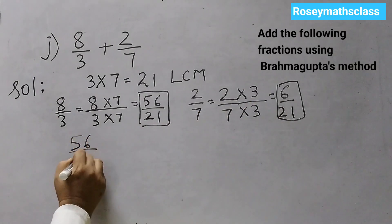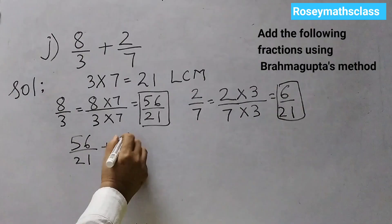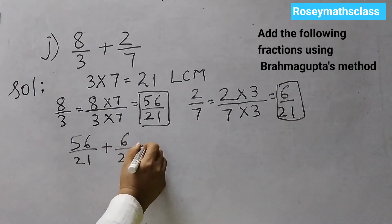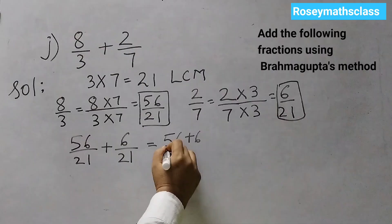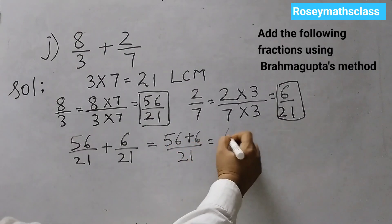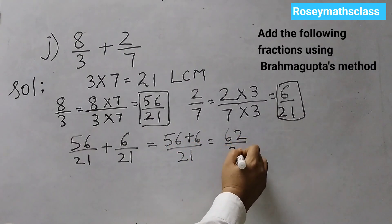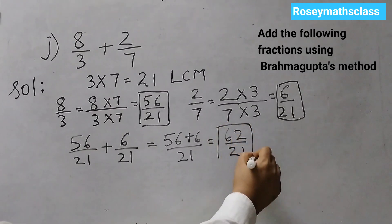Add these two fractions now. So, 56 over 21 plus 6 over 21 equals 56 plus 6 by 21. So, 62 over 21. This is your answer.